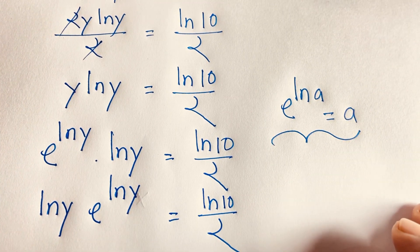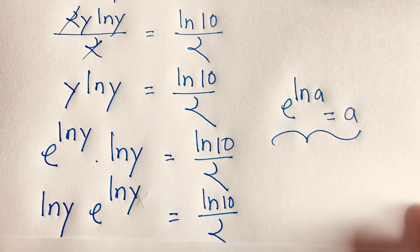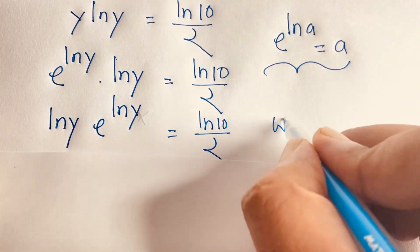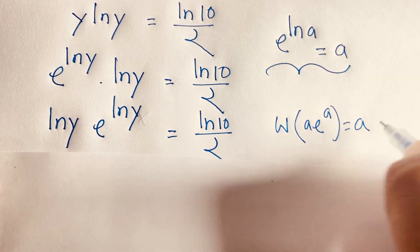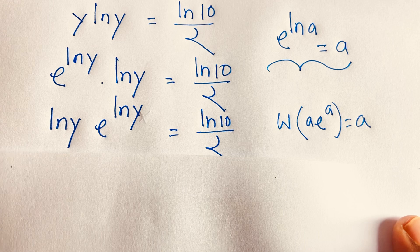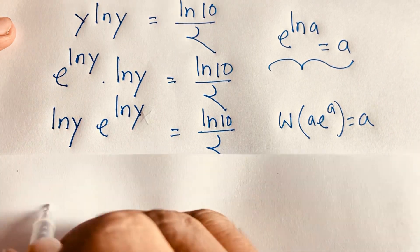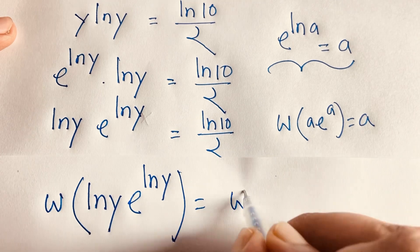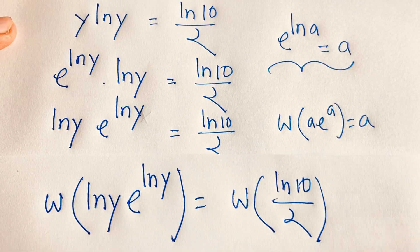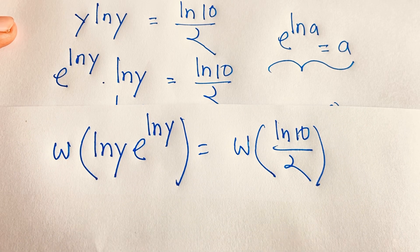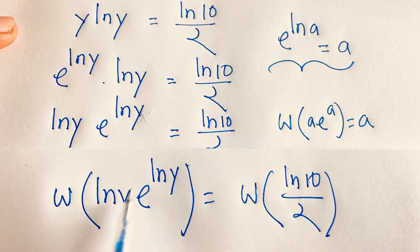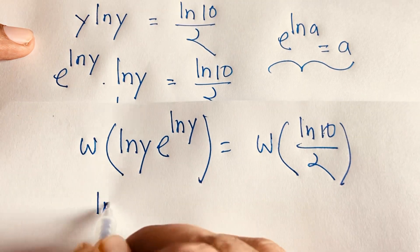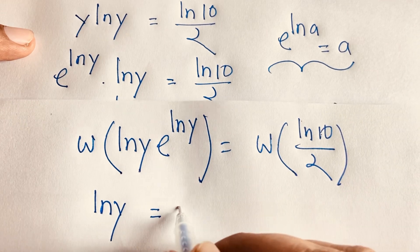Now at this moment, I apply the Lambert W function to both sides. The Lambert W function satisfies: W(a·e^a) = a. Applying it here: W(ln(y)·e^(ln y)) = W(ln(10)/2). According to the Lambert W rules, this gives ln(y) = W(ln(10)/2).